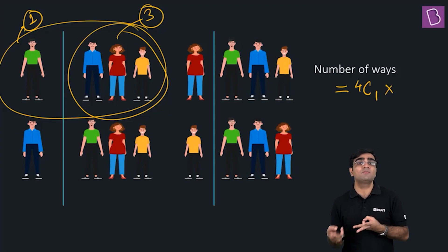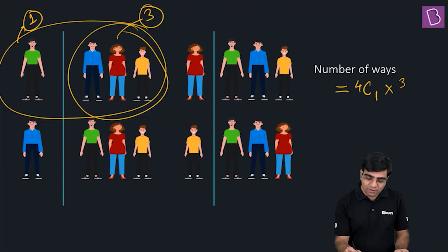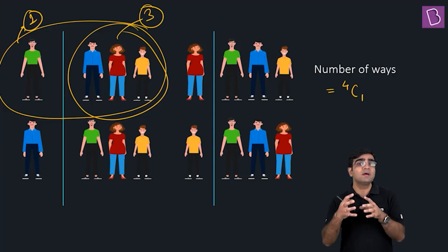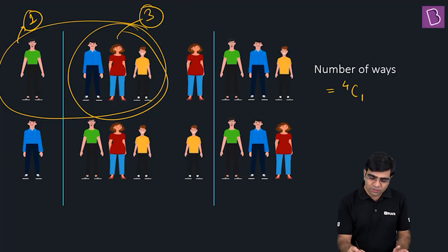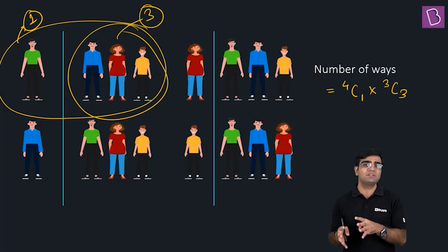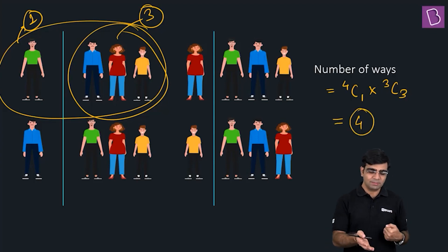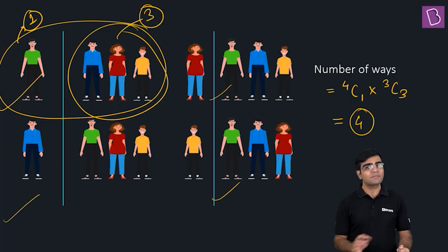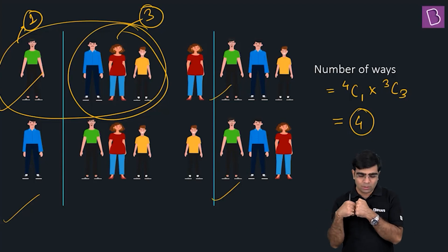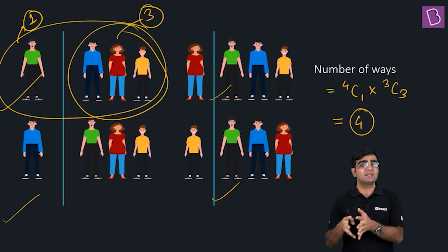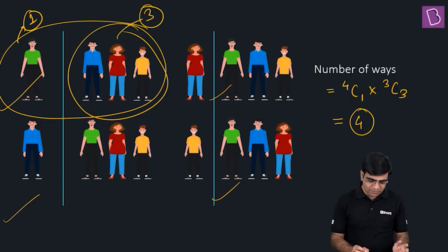The number of ways: first, pick one person for the first group — that's 4C1 out of four folks. Now I'm left with three folks and all three must go into the second group, so that's 3C3. Since these are done in succession, the number of ways gets multiplied. 4C1 × 3C3 = 4, which confirms exactly the four options we counted. So what we're doing is a sequential selection — first selecting one person, then selecting the other three.